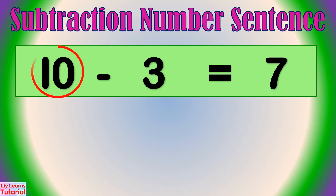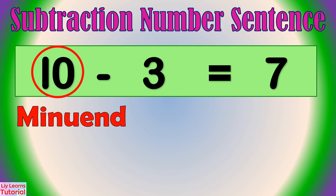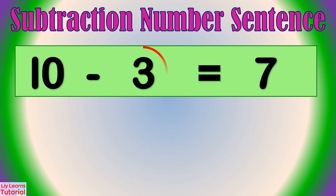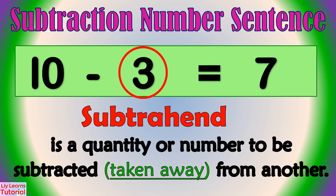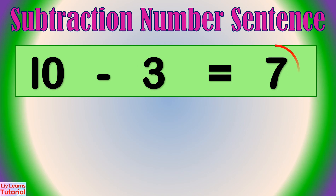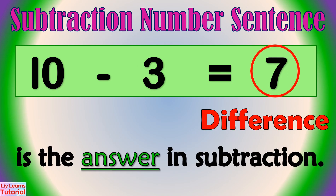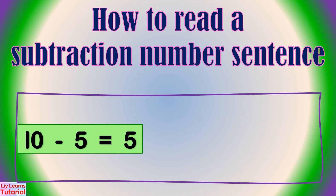This is the minuend. Minuend is a quantity or number from which another number is to be subtracted. Subtrahend is the quantity or number to be subtracted, taken away from another. The answer in subtraction is called difference.